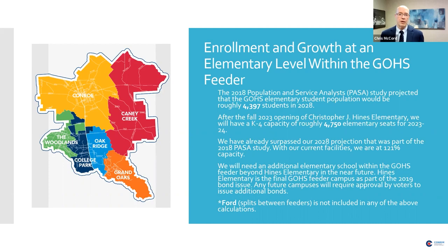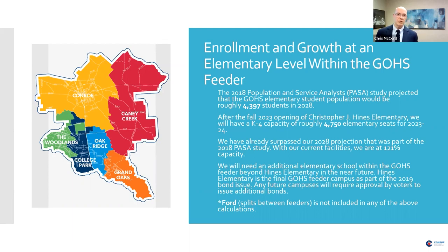Honing in on Grand Oaks elementary level: we had a demographer analysis back in 2018 projecting 4,397 elementary students in the year 2028. After we open Christopher J. Hines Elementary in fall of 2023, that gives us a capacity of 4,750 elementary seats for 2023–24. With the booming economy and interest rates driving housing demand, we've already passed that 2028 projection. We are at 121% of capacity for elementary schools in the Grand Oaks feeder.